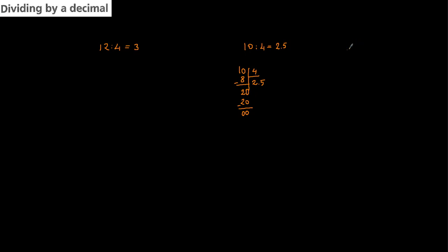There are also cases where the operation will not end, like 74 divided by 6. I'm going to write the result here. I always start from the left side in division. How many times does 6 go into 7? Once. 1 times 6 equals 6. 7 minus 6 equals 1.